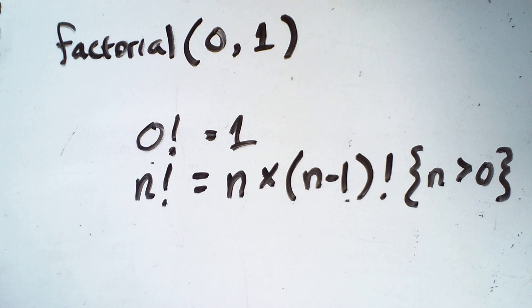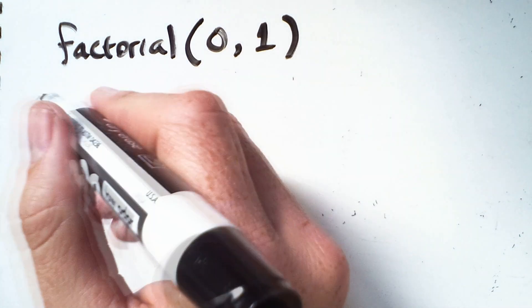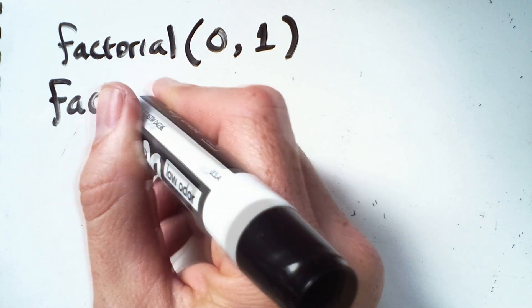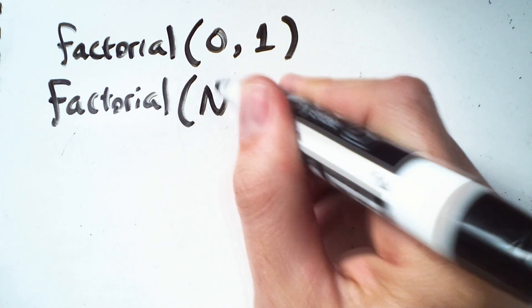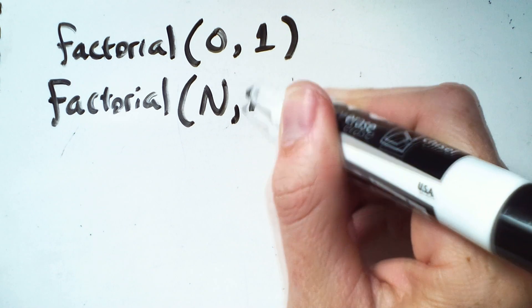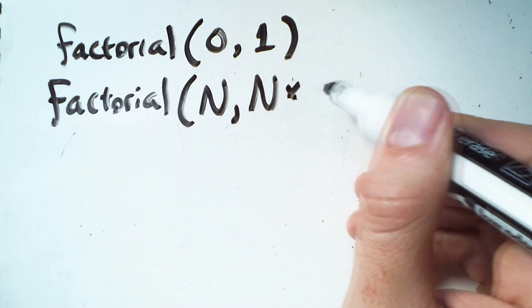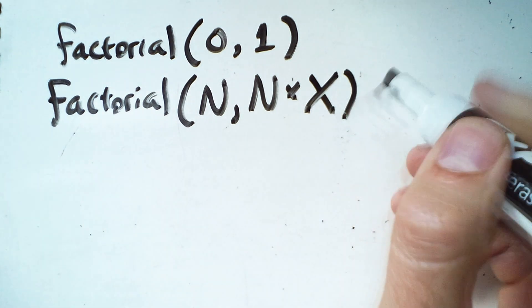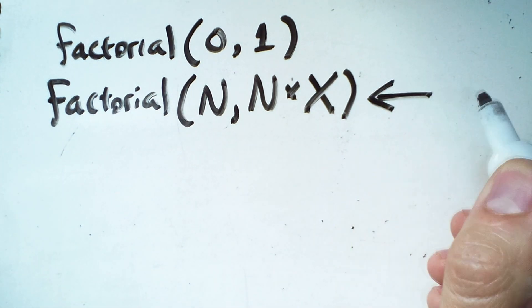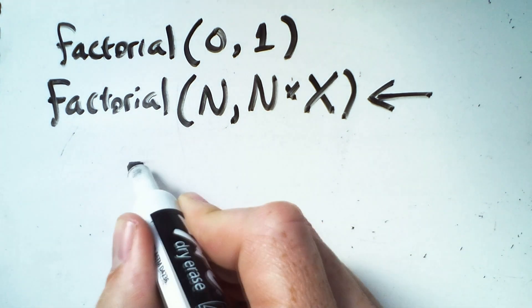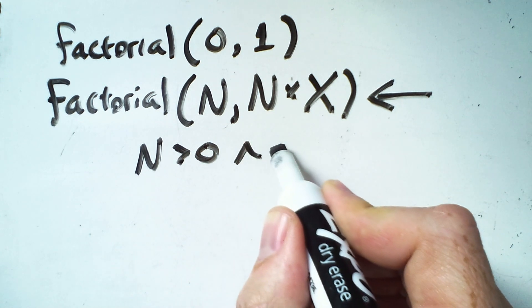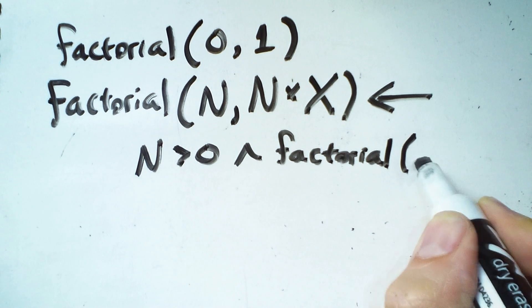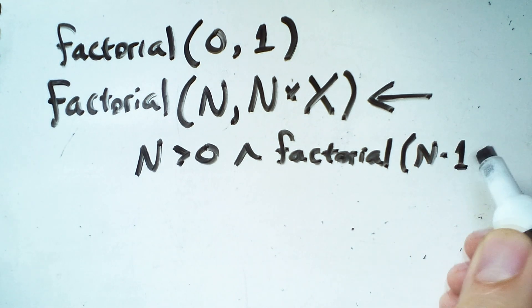But how do we define a recursive case for our predicate? So I'm going to say that the factorial of n equals n times some value x. And this is true or implied if n is greater than 0 and the factorial of n minus 1 is equal to x. And that's it.